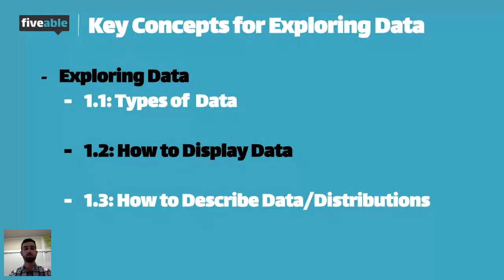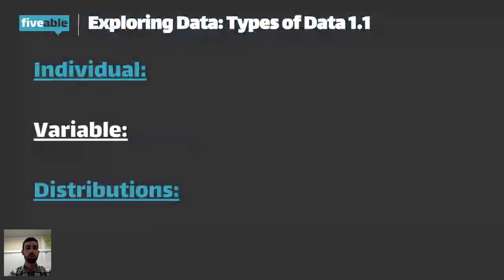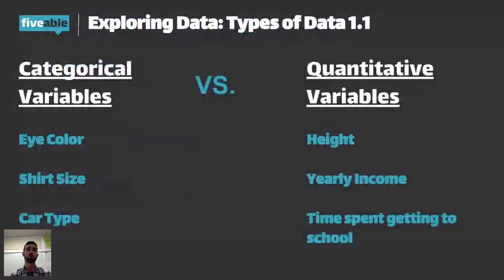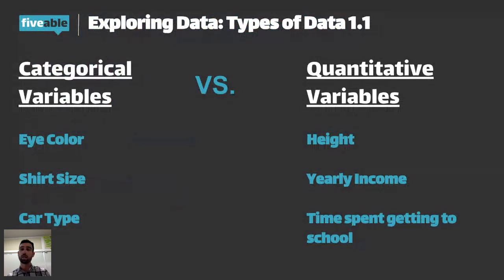Let's dive into the different types of data. First, we have categorical variables. Categorical variables are variables that you put into different categories, hence the name. For example, eye color — there's no numerical value for your eye color, it's just a category. So eye color: blue, red, green, whatever.